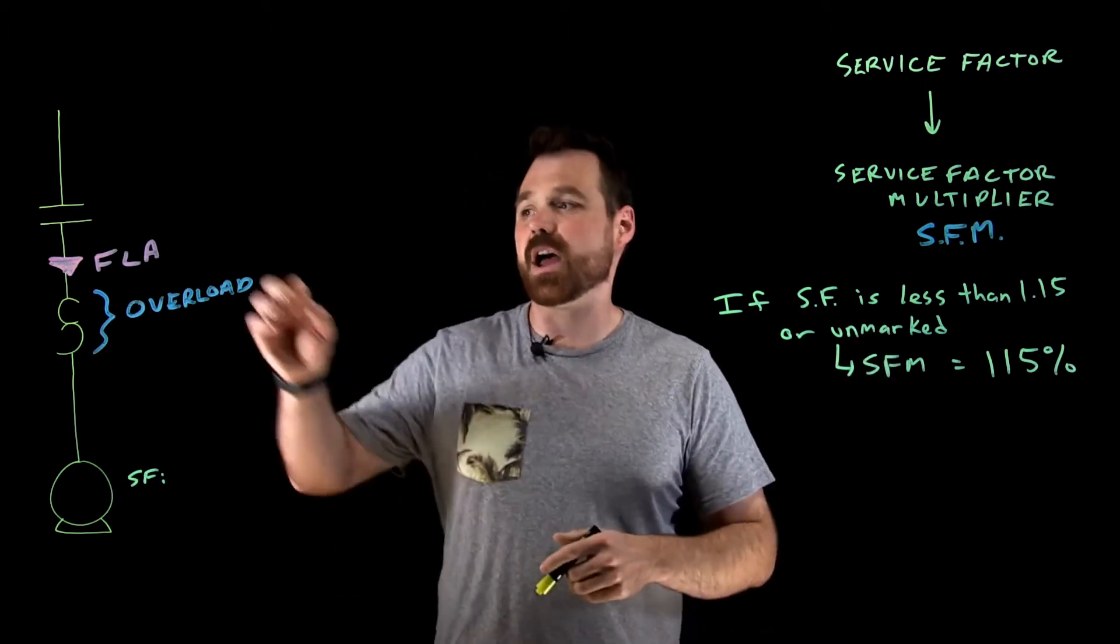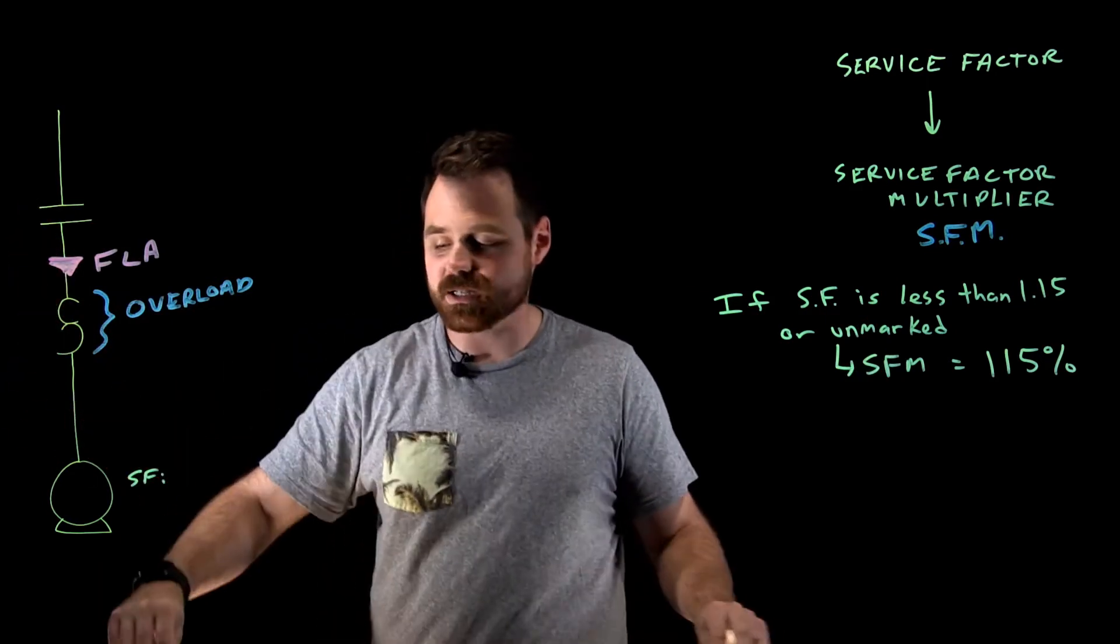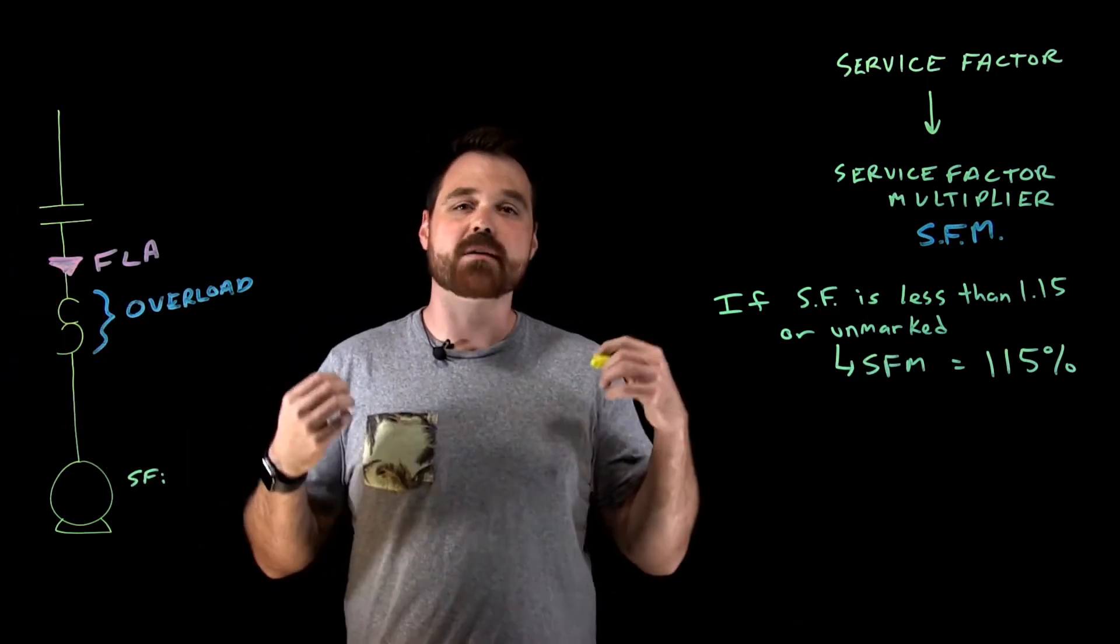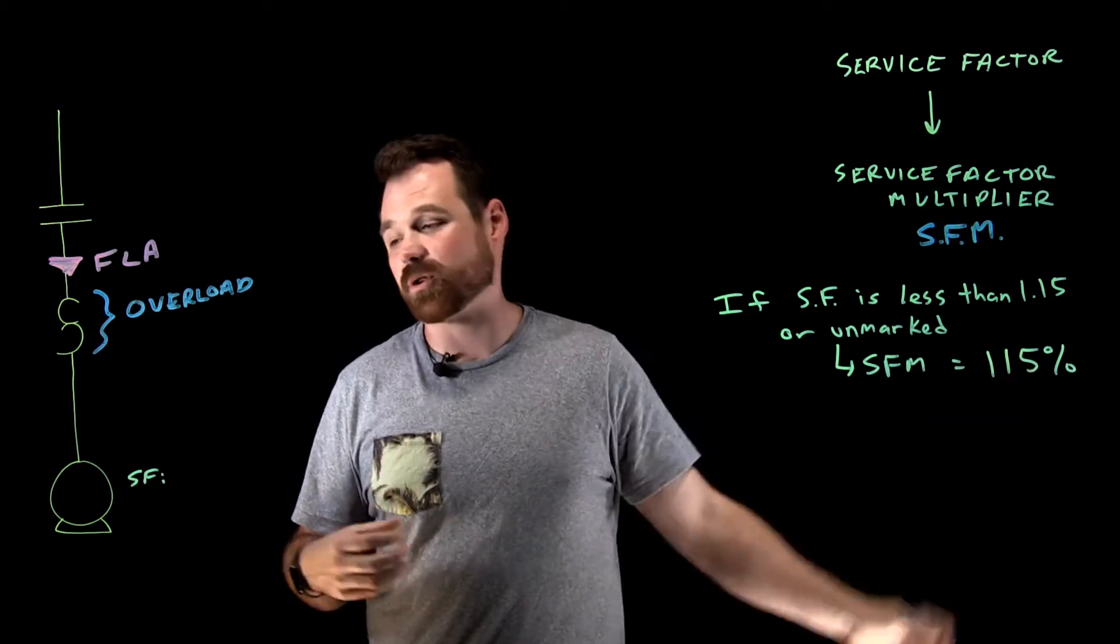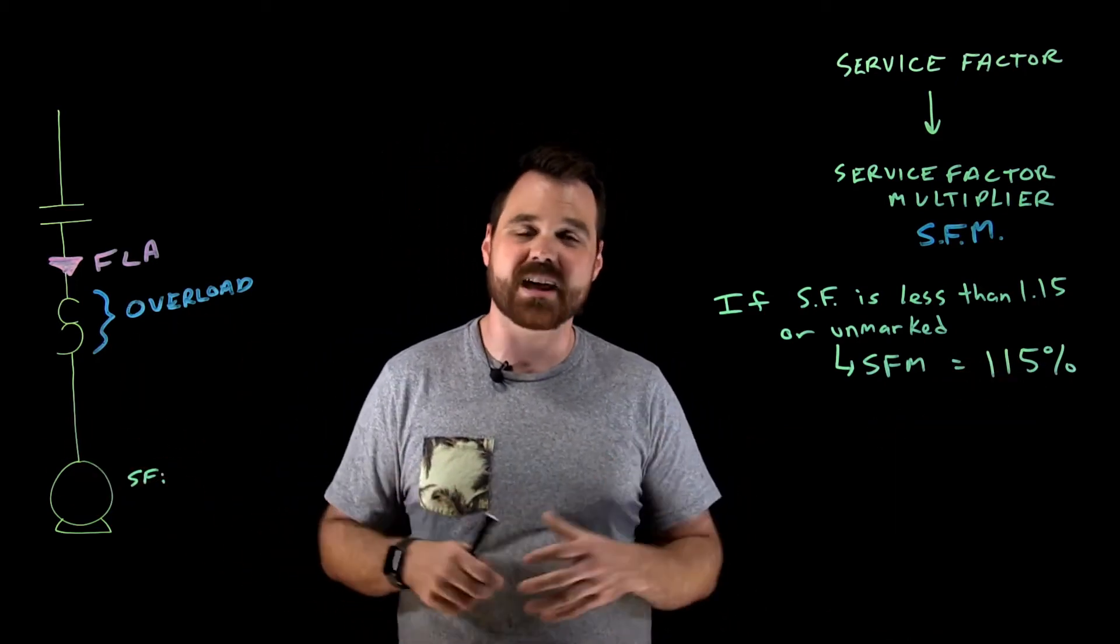So my service factor is marked less than 1.15. I'm going to use 115% as my service factor multiplier. So I would take my FLA or whatever current is going to be running through that overload device. I take that current and I multiply it by 115%, and that is what I would set my overloads at. And that's my maximum allowable setting.